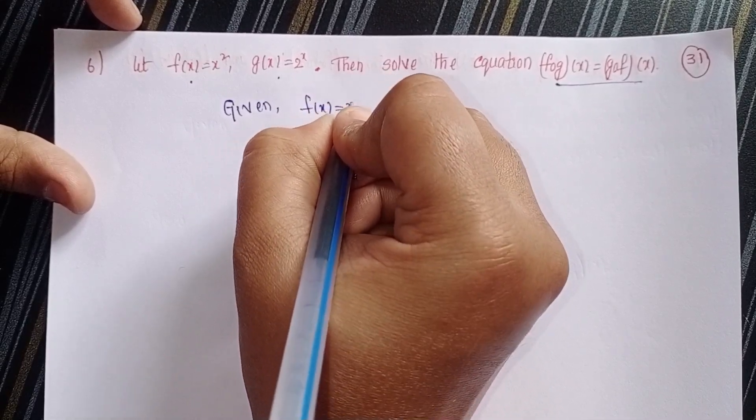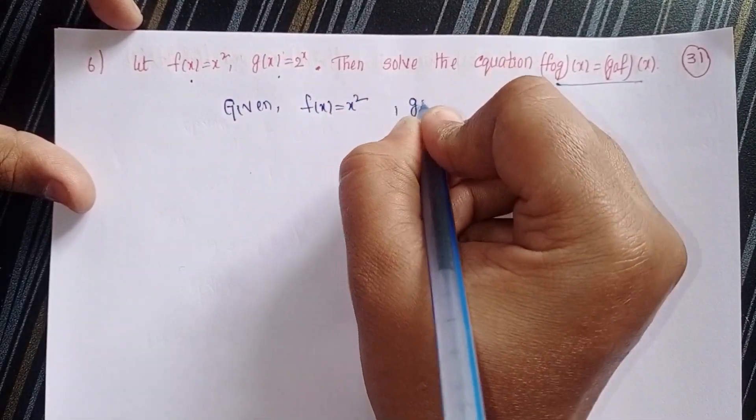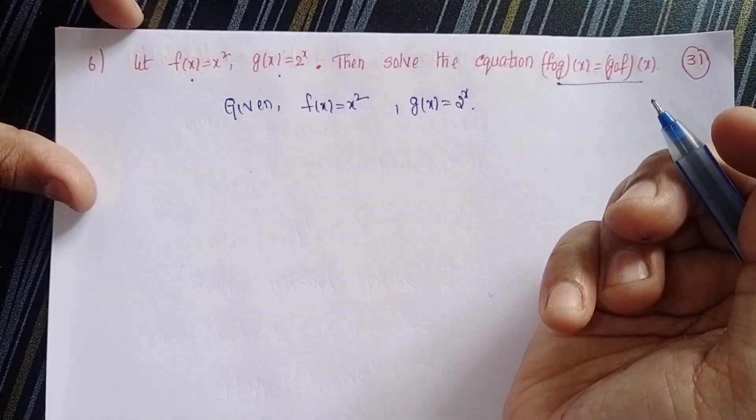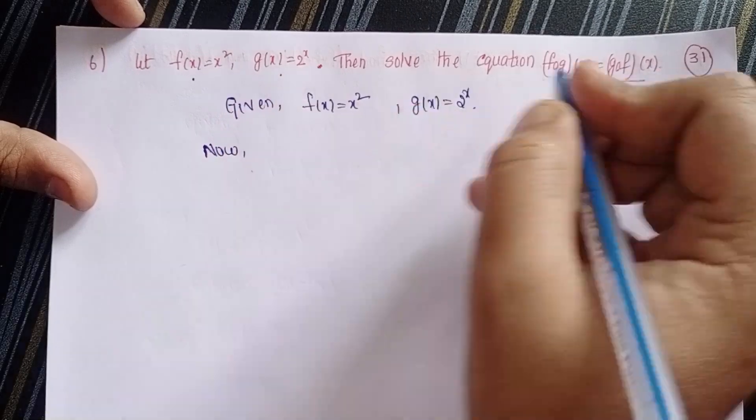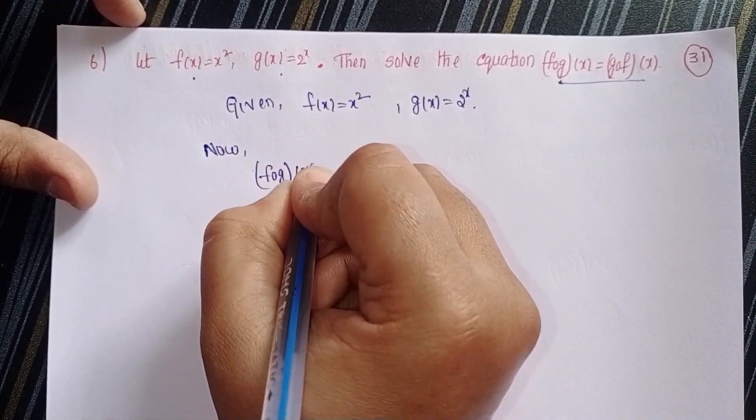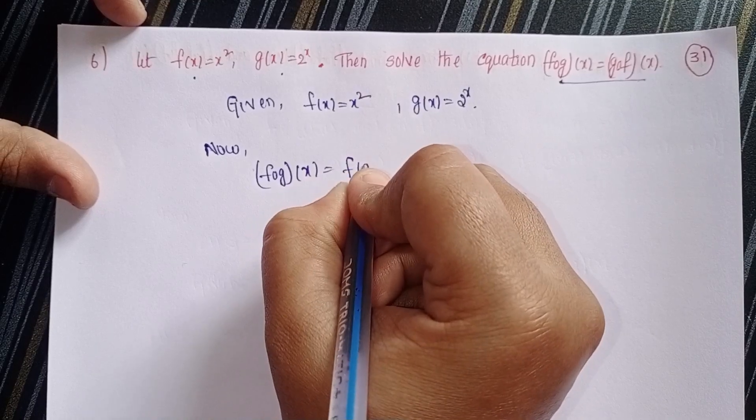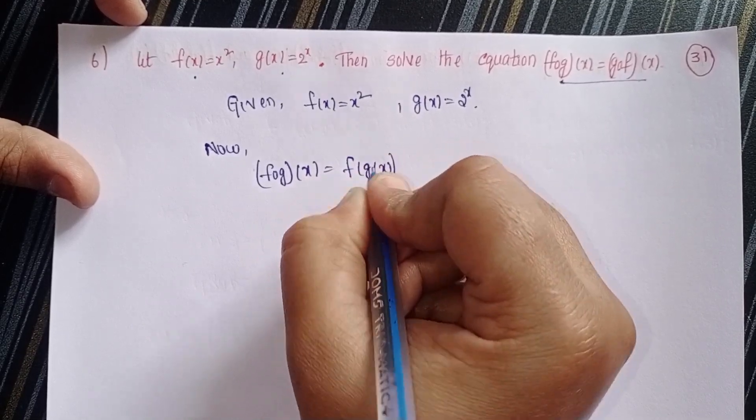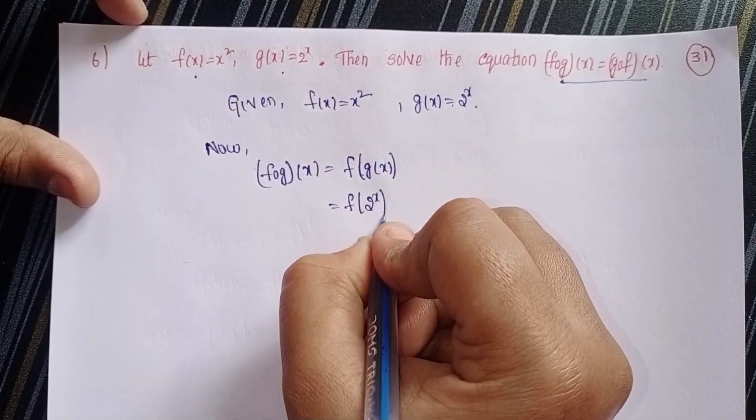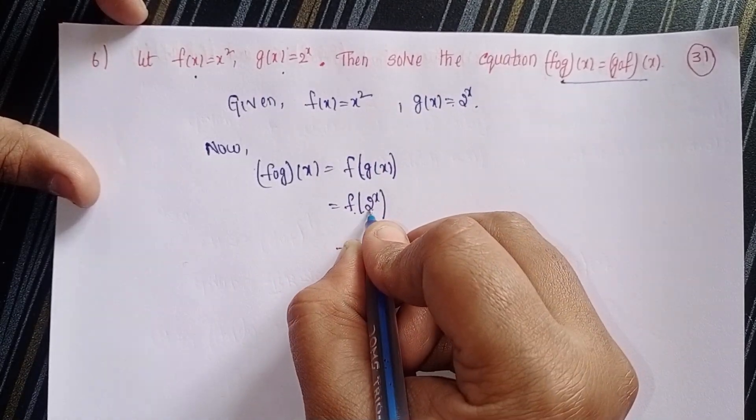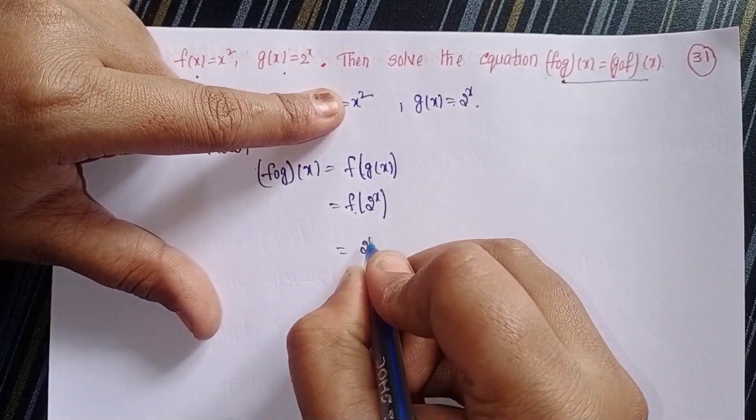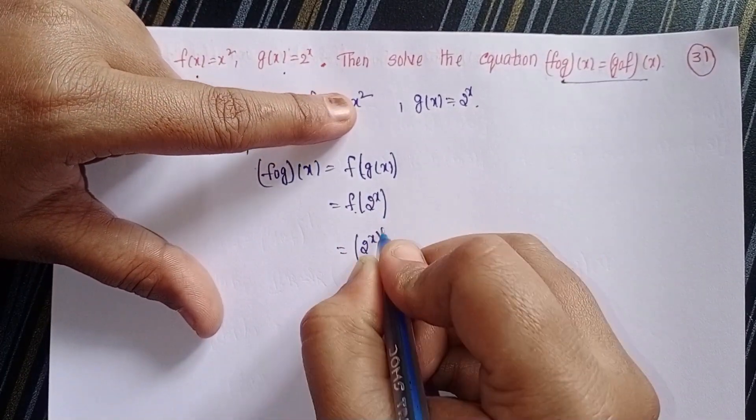Given: f of x equals x square, g of x equals 2 power x. Now we need to find out f circle g of x. f of g of x means 2 power x. In f of x we have x power 2, so x means 2 power x whole power 2, which equals 2 power 2x. This is equation 1.